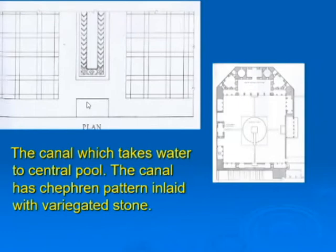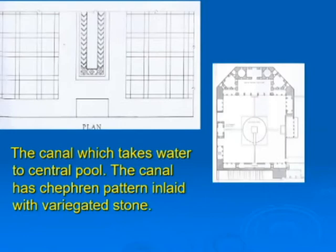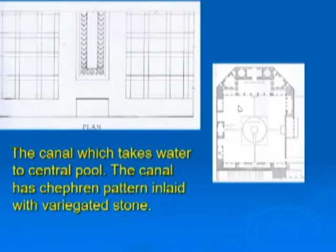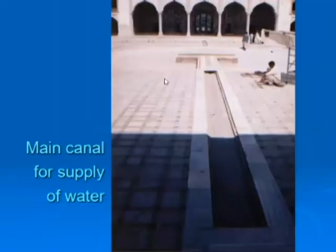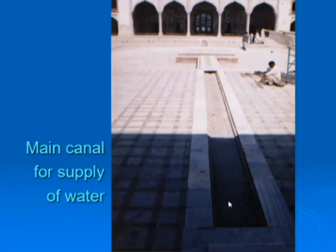The canal which takes water to the central pool has a chevron pattern inlaid with variegated stone. When the pond was full, the water flowed underground through the roof of the veranda into that channel. This passage is halfway open, and when the canal reaches the brim of the central pond it goes underground, where the bridge starts so that workers, dancers, or performers can move to the Chandni. That is the complete process of how water came from the top of the wall to this canal.